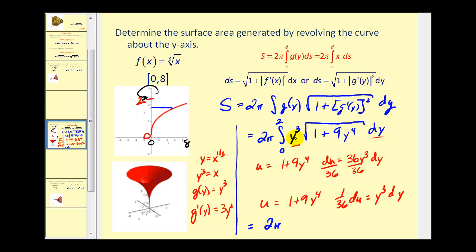Rewriting this in terms of u, we have 2π times (1/36)du times the square root of u. The square root of u is u^(1/2). Let's take this to the next screen and continue.